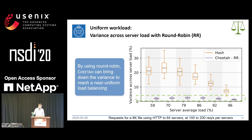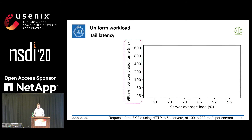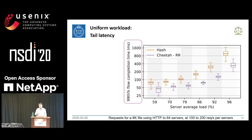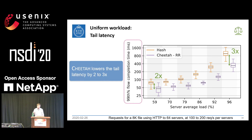If we measure tail latency — the 99th-percentile completion time for the same experiment — which is a very important metric in data centers because you want all users to always have good service, we can see that we lower tail latency by 2 to 3x, because no server gets way too many requests and requests have a more uniform distribution of service time.